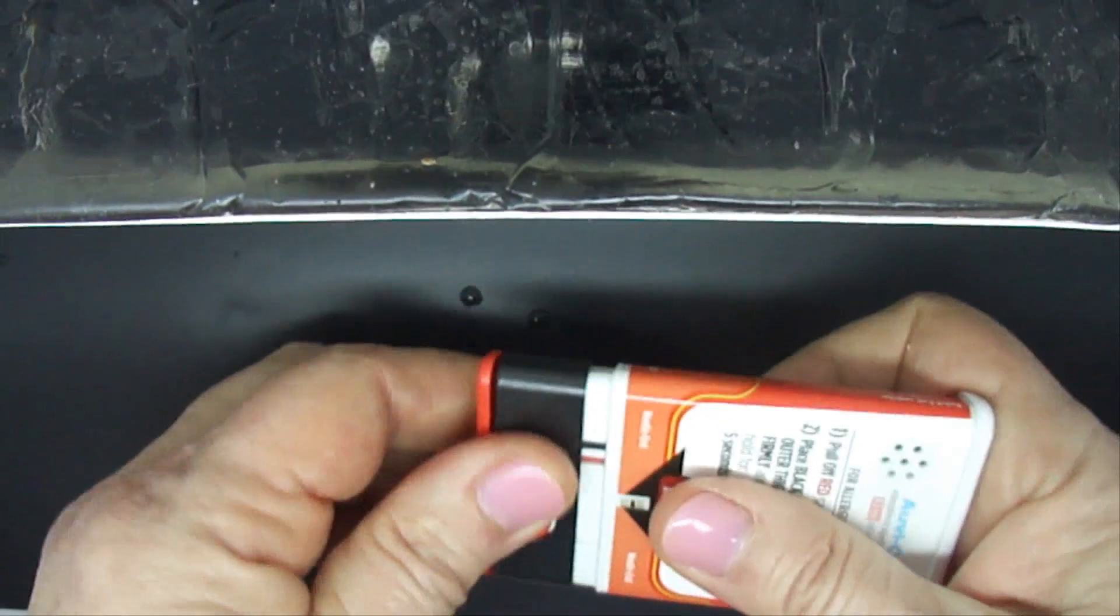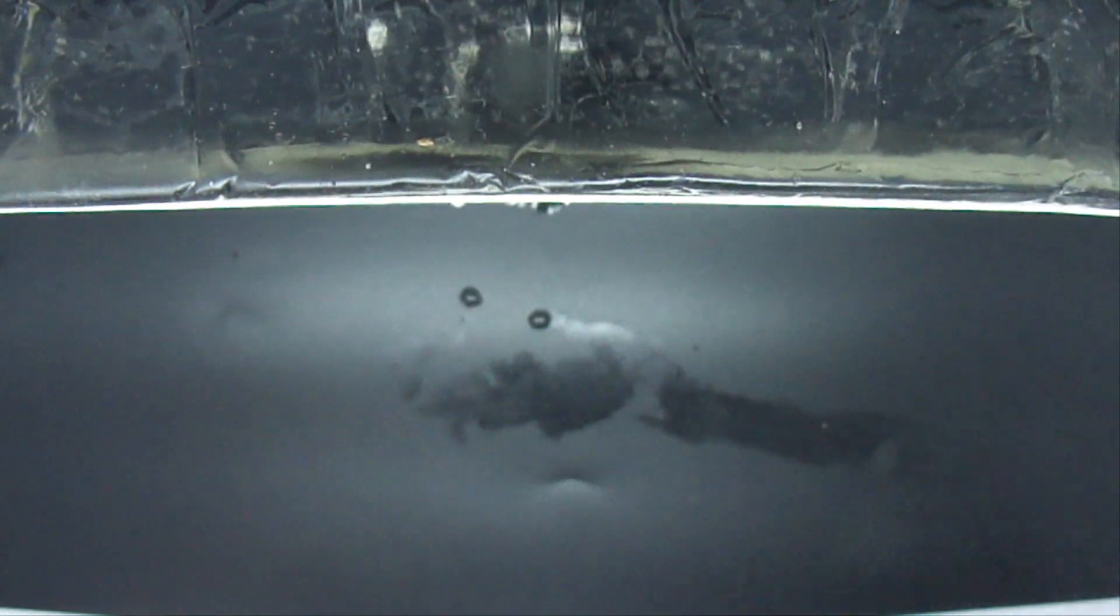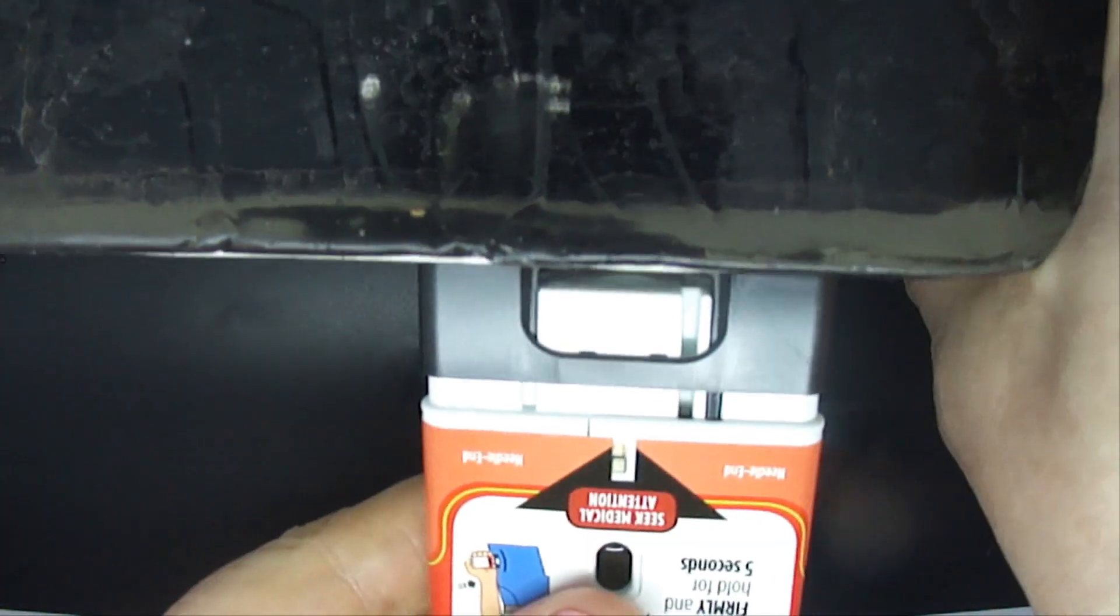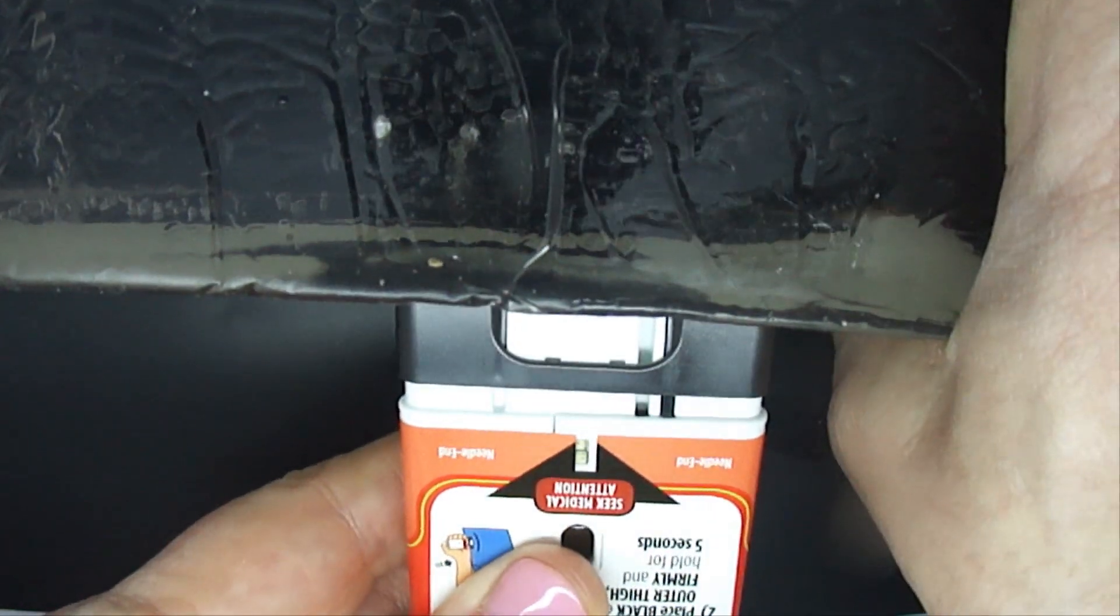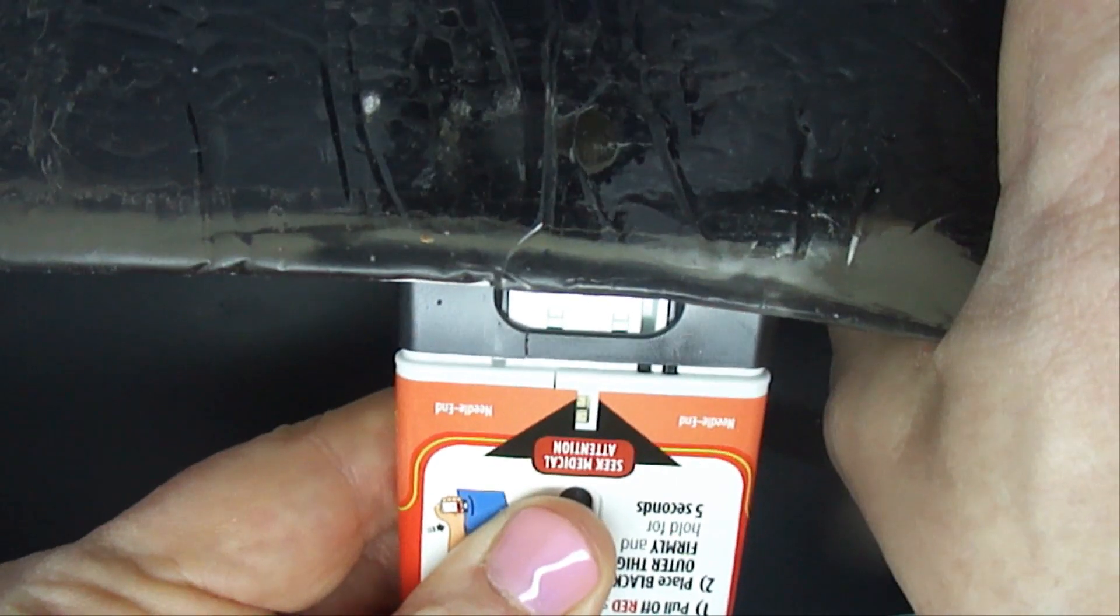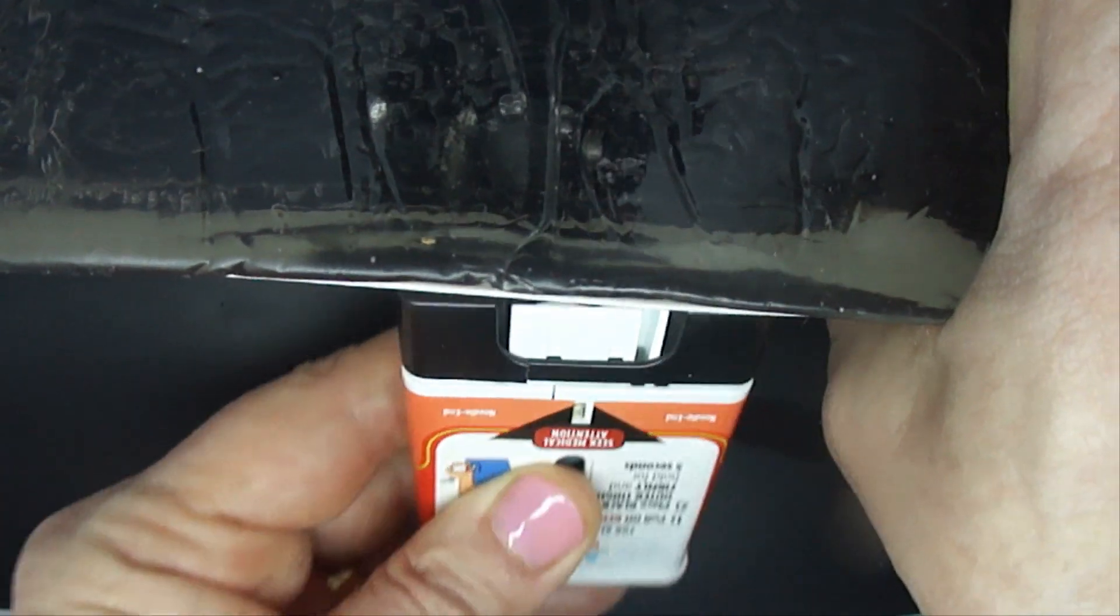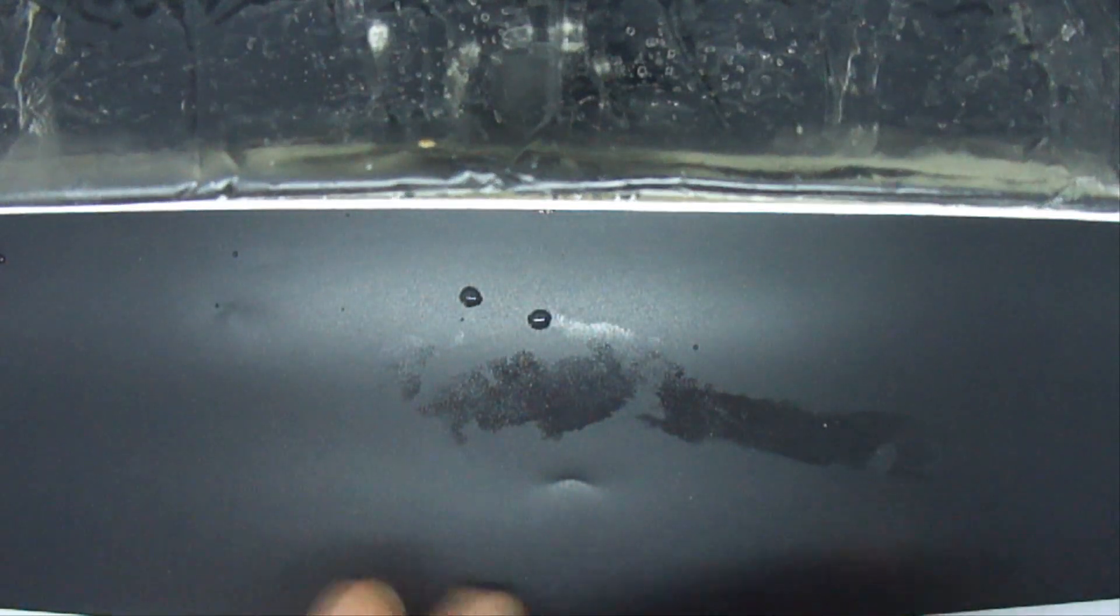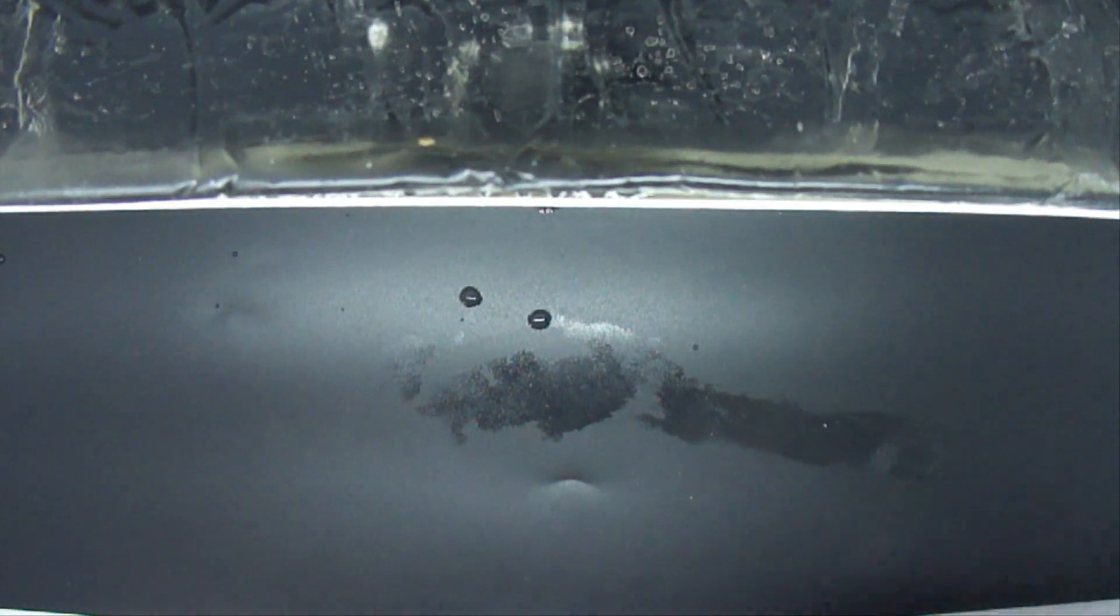If you are ready to use, pull off red safety to inject, place black end against outer thigh, then press firmly, five, four, three, two, one. Injection complete. You will notice with this device that the needle came out, injected the medication, and retracted back into the device.